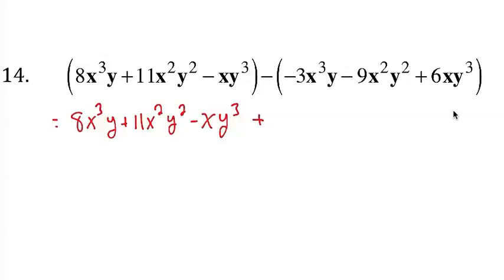So we're going to get - the negative comes in, changes this one to a positive. So we get plus 3x to the power of 3y. Changes the negative 9, comes in, changes that one to a positive, so plus 9x squared y squared.